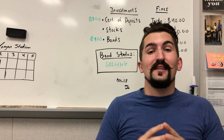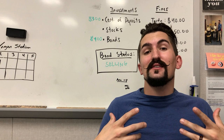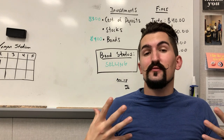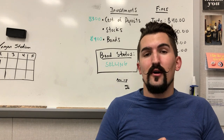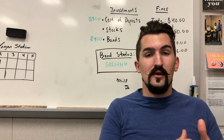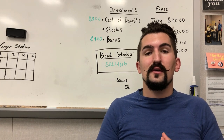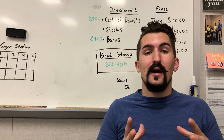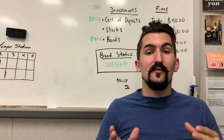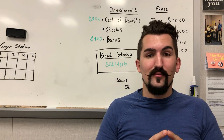Welcome back to AP World Simplified. Today we'll be discussing the empires of China in the early modern era, including the Ming and Qing Dynasty, as well as monarchical power in Western and Eastern Europe.